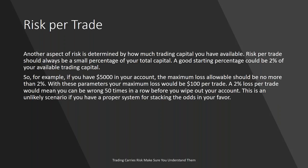Another aspect of risk is determined by how much trading capital you have available. Risk per trade should always be a small percentage of your total capital — a good starting point is 2% of your available trading capital. For example, if you have $5,000 in your account, the maximum loss allowable should be no more than 2%, so your maximum loss would be $100 per trade, meaning your stop loss must be set within a $100 loss. A 2% loss per trade would mean you could be wrong 50 times in a row before you wipe out your account — an unlikely scenario if you have a proper system for stacking the odds in your favor.